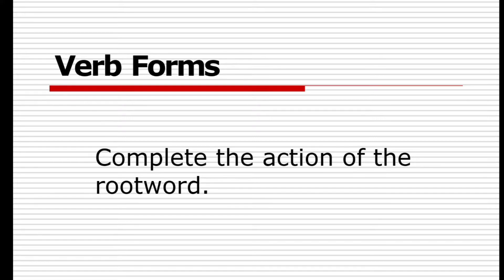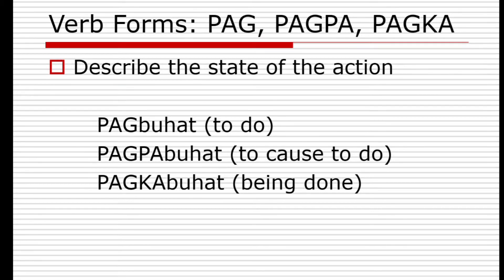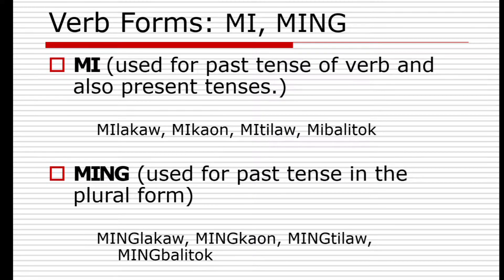The verb forms complete the action of the root word. For example, the verb form 'pad' and 'but' — these describe the state of the action. For example, 'buhat' means to do, 'magbuhat' means to cause to do, and 'gibuhat' means the action being done.